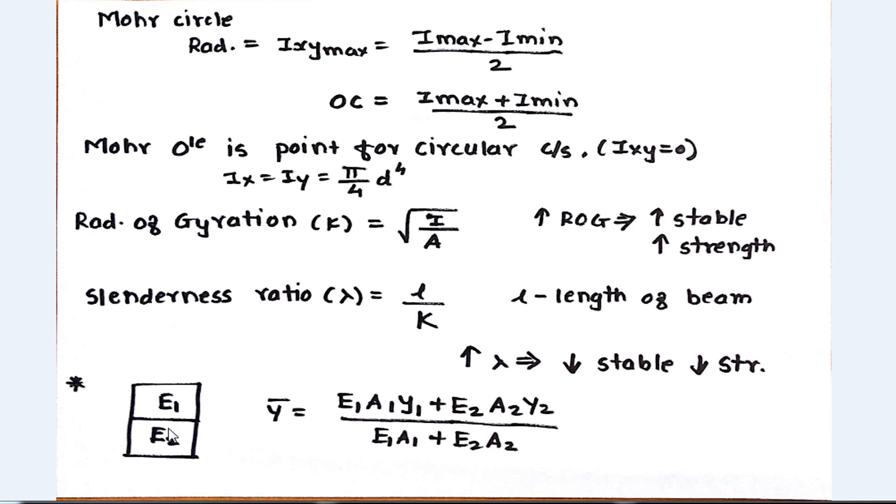The last one, as shown in this diagram: if we want to calculate the y-bar in this particular case of two materials with different modulus of elasticity (different E), then the formula is y-bar equals E1 into A1 into Y1 plus E2 into A2 into Y2, divided by E1 into A1 plus E2 into A2. Similarly, x-bar is calculated if there are two different materials with different modulus of elasticity.